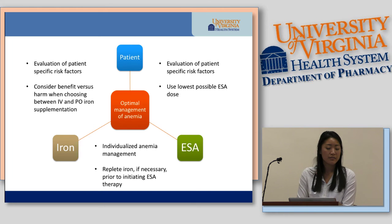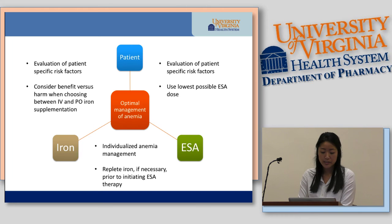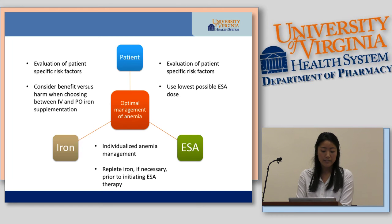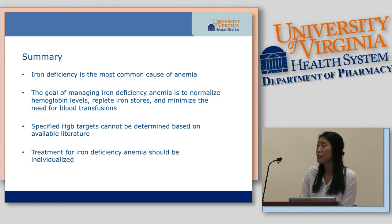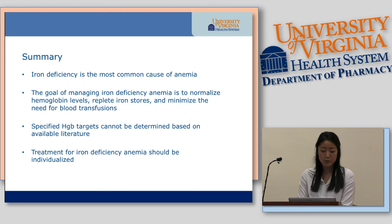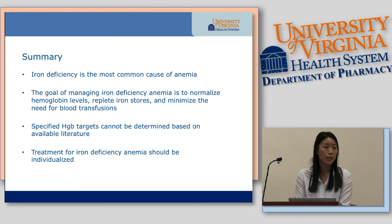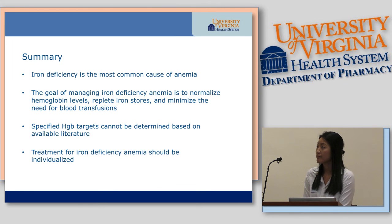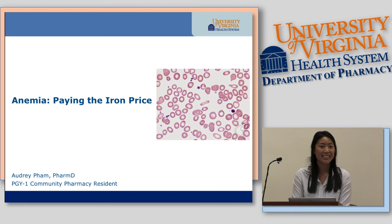When thinking about optimal management of anemia, you want to strike a balance between patient-specific risk factors, the use of ESAs, and the use of iron. Evaluate patient-specific risk factors, use the lowest possible dose of ESA, replete iron if necessary prior to initiating ESA, and consider the benefit versus harm when choosing between IV and oral iron supplementation. In summary: iron deficiency is the most common cause of anemia. The goal of managing iron deficiency anemia is to normalize hemoglobin levels, replete iron stores, and minimize the need for blood transfusions. Specified hemoglobin targets cannot really be determined based on available literature, and treatment should be individualized to the particular patient.